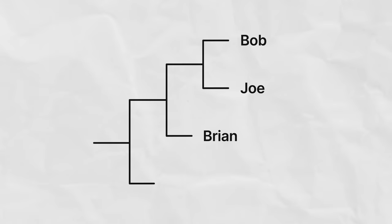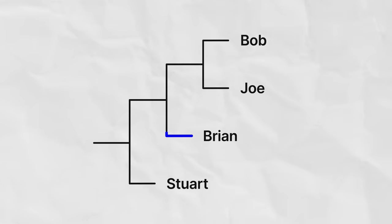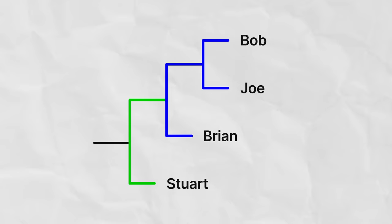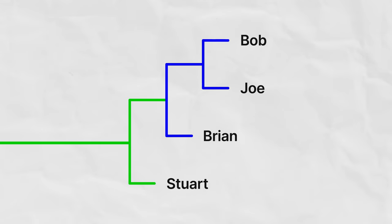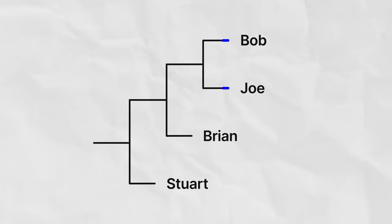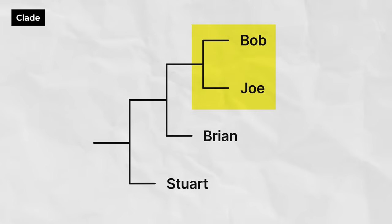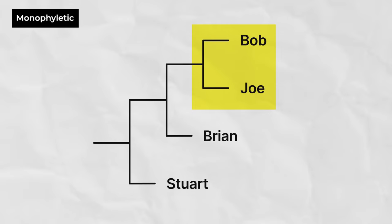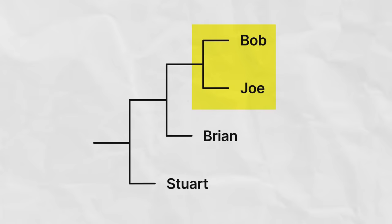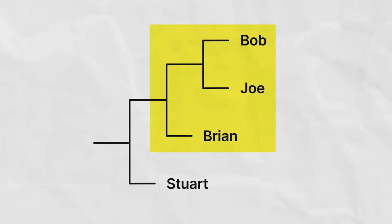If I threw Stuart onto the phylogeny as well and saw that he goes here, I would be able to see that Brian is more closely related to Bob and Joe than he is to Stuart. I would also be able to see that Stuart is equally related to Bob, Joe, and Brian, because he shares the same ancestors with all of them. Now, Bob and Joe, with their parents, form a family called a clade. A clade, also called a monophyletic group, is a common ancestor and all of its descendants. Brian, Bob, and Joe, with their most recent shared ancestors and everyone in between, also form a clade.